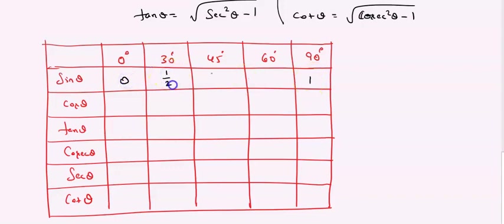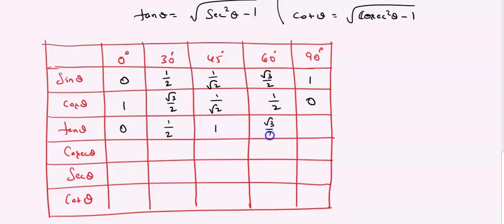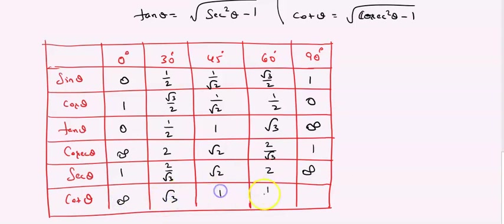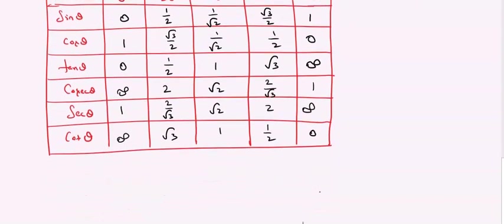For cos theta the values are: cos 0° = 1, cos 30° = √3/2, cos 45° = 1/√2, cos 60° = 1/2, cos 90° = 0. For tan theta: tan 0° = 0, tan 30° = 1/√3, tan 45° = 1, tan 60° = √3, tan 90° = not defined. For cosecant theta the values are the reciprocals: not defined, 2, √2, 2/√3, 1. Secant theta: 1, 2/√3, √2, 2, not defined. Cot theta: not defined, √3, 1, 1/√3, 0.